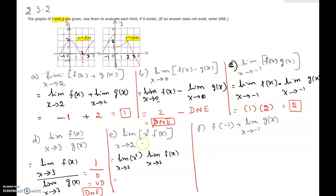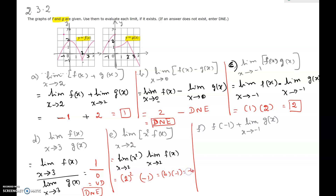Part e: limit as x approaching 2 of x squared times f(x). By the property of limits, it's the limit of x squared times the limit of f(x). The limit of x squared as x approaches 2 is 4. The limit of f(x) as x approaches 2, which we already found from the first graph, is negative 1. So 4 times negative 1 equals negative 4.